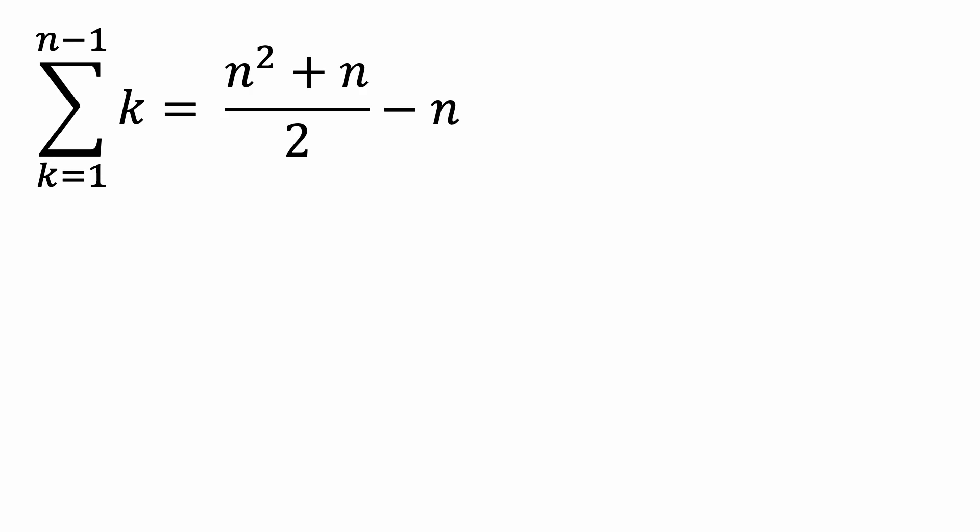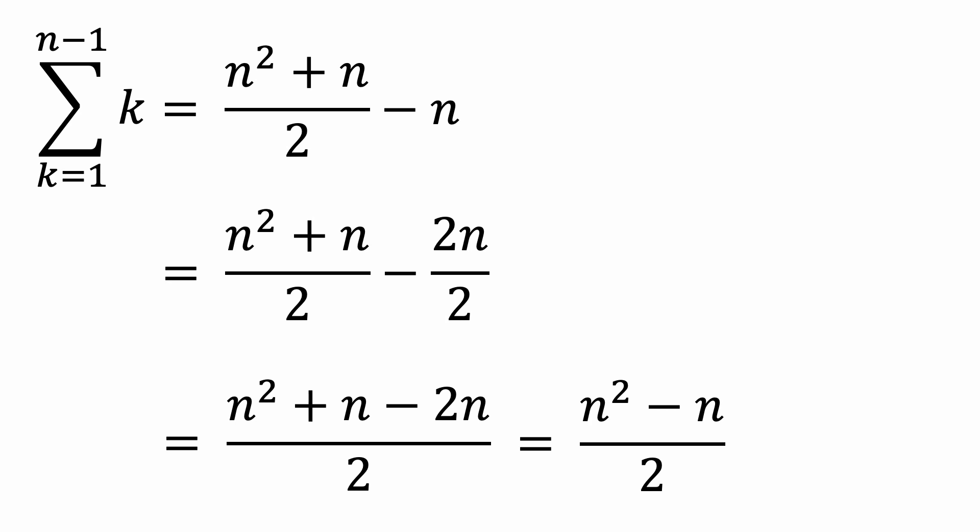So to find the sum to n minus 1, let's take (n² + n) over 2 and just subtract n from it. After a bit of manipulation, we can see that this ends up being (n² - n) over 2. And since with Big O notation, we only take the dominant term and drop constants, this ends up being O(n²).